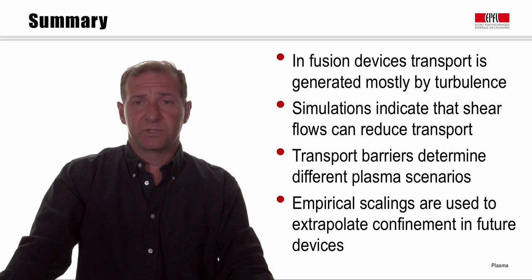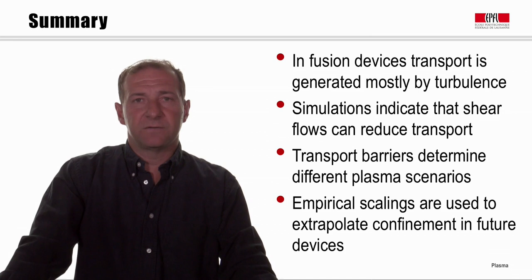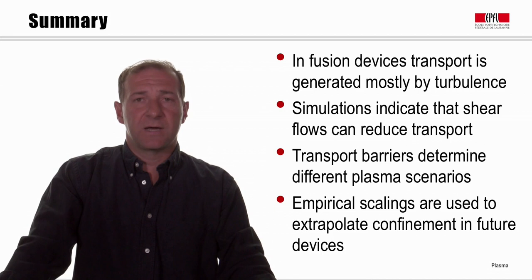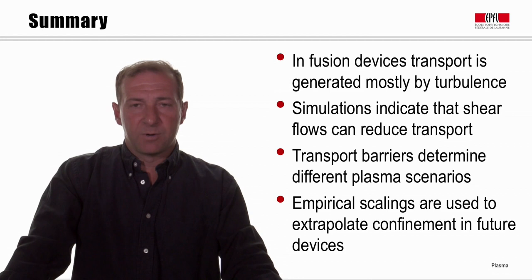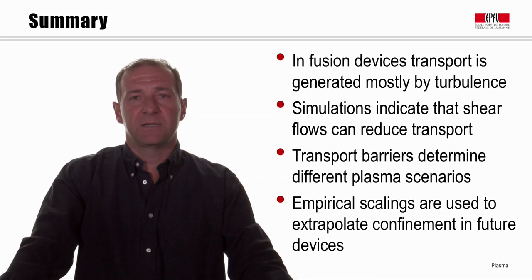This empirical wind-tunnel approach is used to dimension fusion devices like ITER, but we also want to further our understanding of turbulence to improve prediction reliability and optimize the tokamak concept. In summary: in fusion devices, transport is generated mostly by turbulence. Shear flows can very significantly reduce transport, and the transport barriers associated with them determine different plasma scenarios for future reactors. We currently use empirical scalings to extrapolate confinement and design key parameters for future experiments.